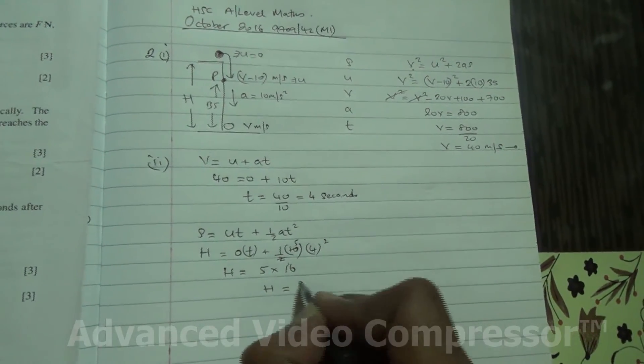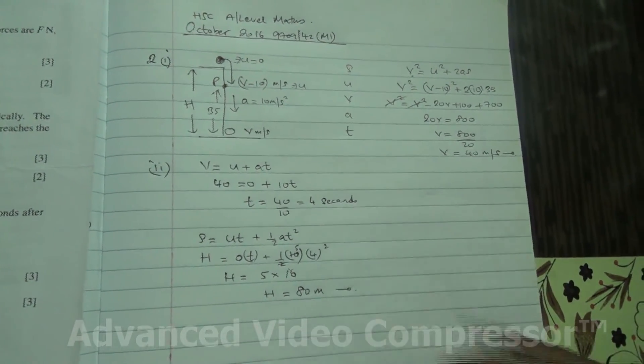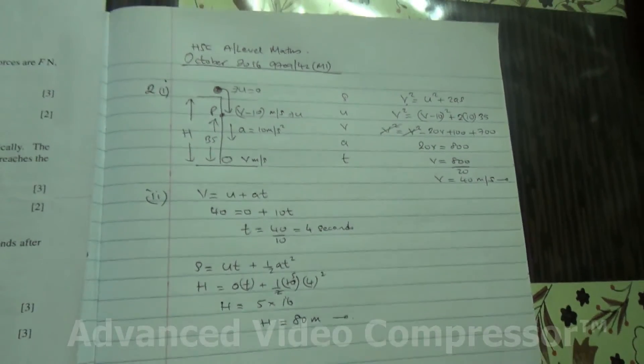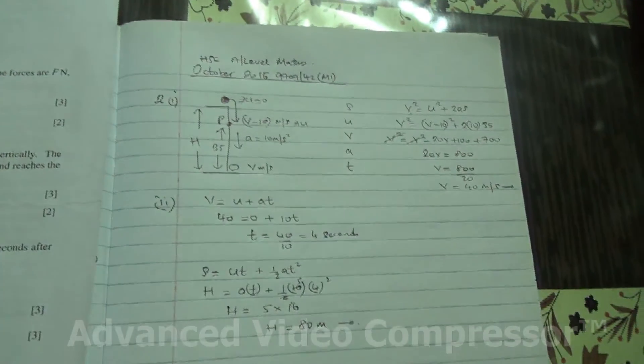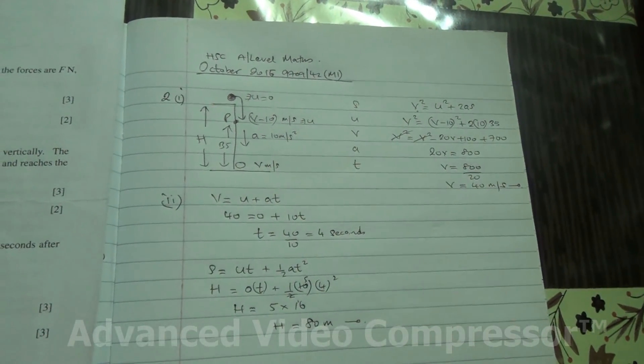Therefore, h, the height of the object above the ground is then 80 meters. This question is taken from October 2015, A Level Maths HSC M1.